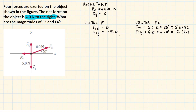For vector F3, F3 is directed upward. So F3x is zero — we do not have any horizontal component. And F3y is positive F3, whatever the magnitude of F3 is. Since we do not have a value for F3 yet, we leave it as F3.